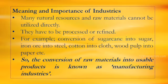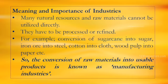Meaning and importance of industries. Many natural resources and raw materials cannot be consumed or utilized directly. They have to be processed or refined before using them. For example, conversion of sugarcane into sugar, iron ore into steel, cotton into cloth, wood pulp into paper, etc. The conversion of raw materials into usable products is known as manufacturing industries.